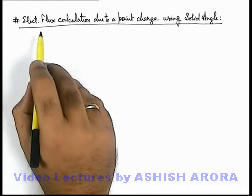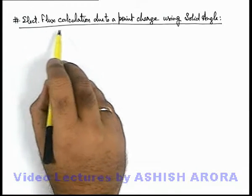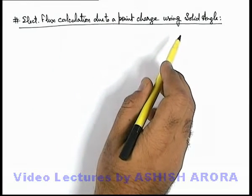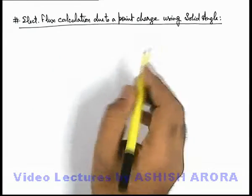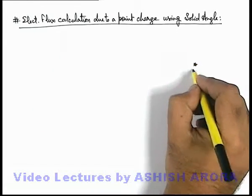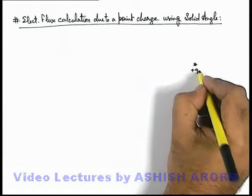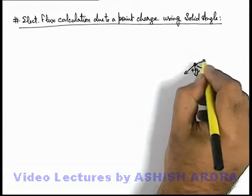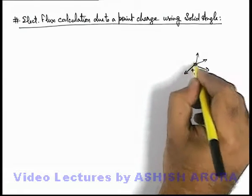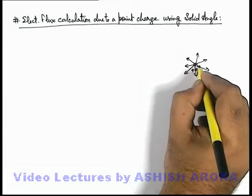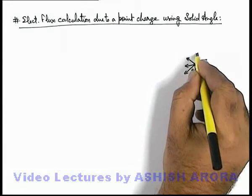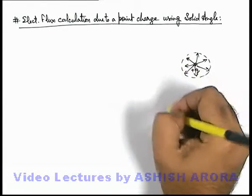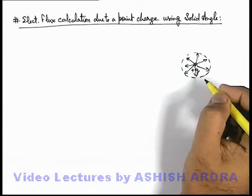Let's discuss the electric flux calculation due to a point charge using a solid angle. We know that if there is a point charge plus q, it originates electric flux q by epsilon not isotropically in its surrounding, uniformly in all directions.